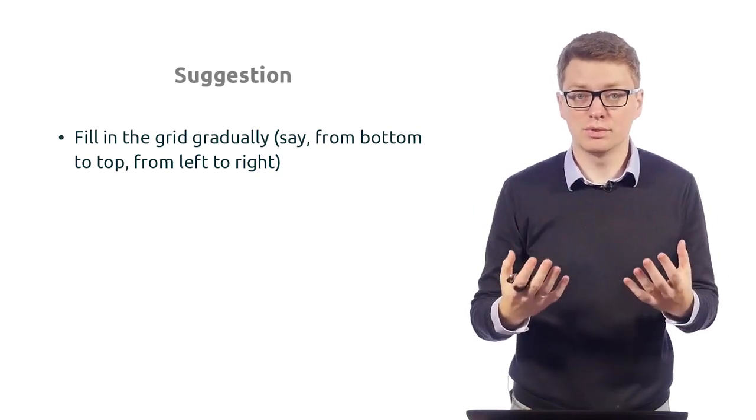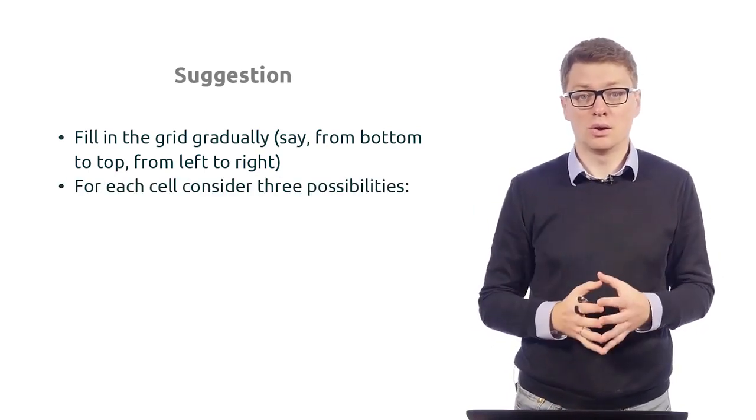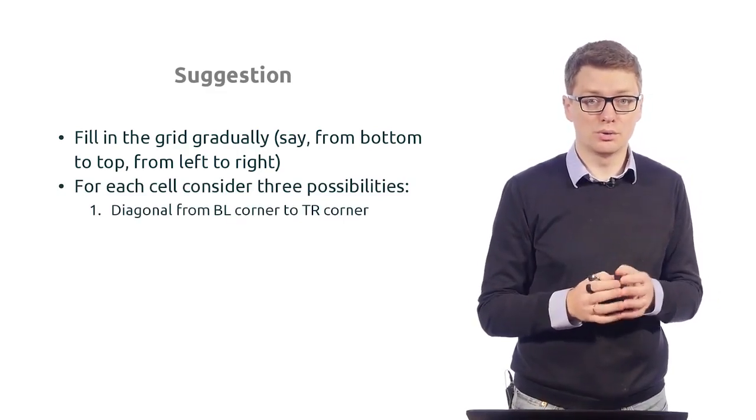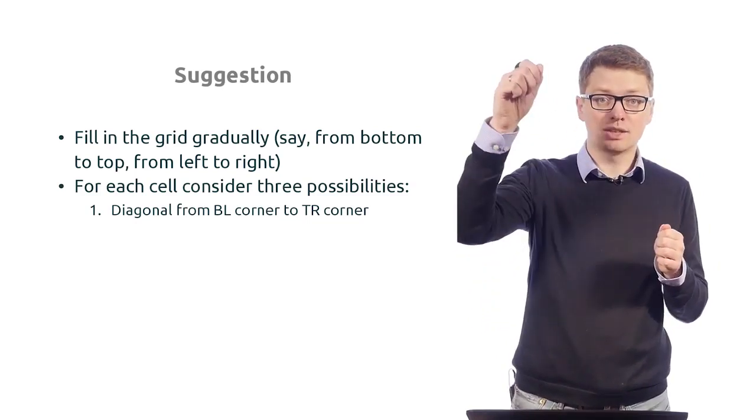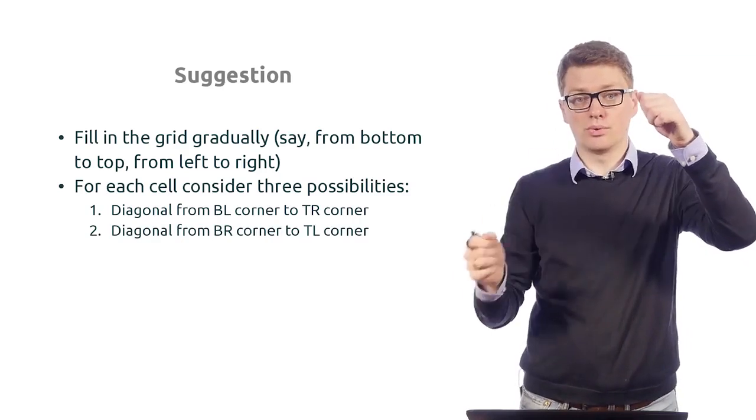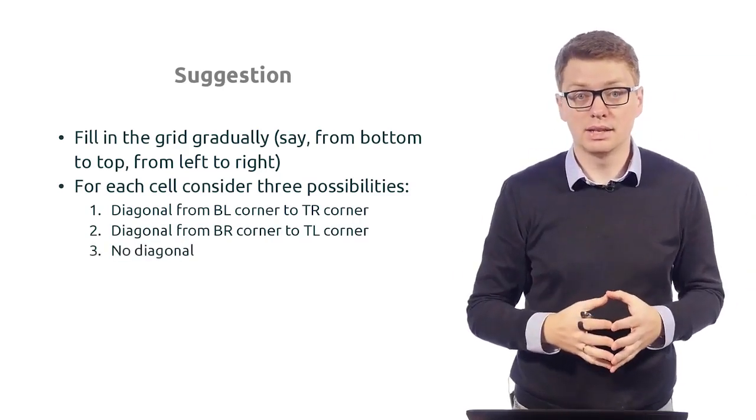So for each cell, for the current cell, you do the following. You consider all possibilities for this cell. Either it has a diagonal which goes from this corner to this corner, or you consider a diagonal which goes from this corner to this corner, or you consider a case when there is no diagonal in this cell.